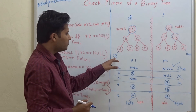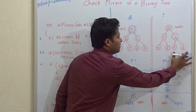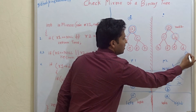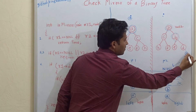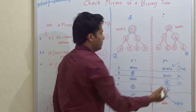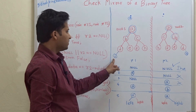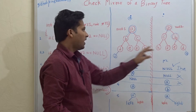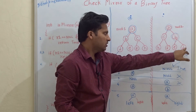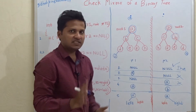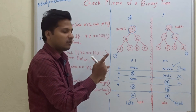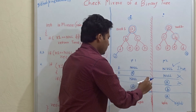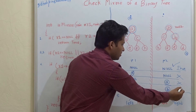Now, suppose you have node J here and on the right of D in the mirror a node is present, but it is not J — for example, it is U. Even if the node is present, if the data is different — here it is J but there it is U — it is false, so we return false.